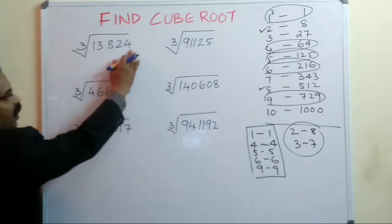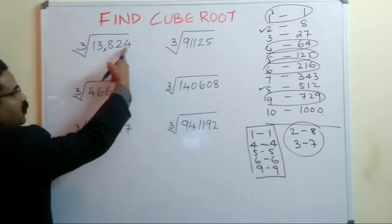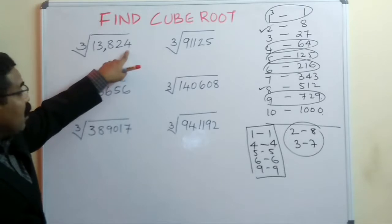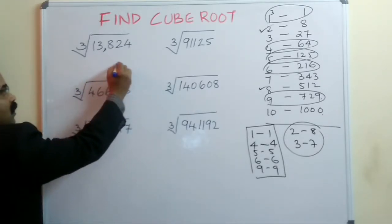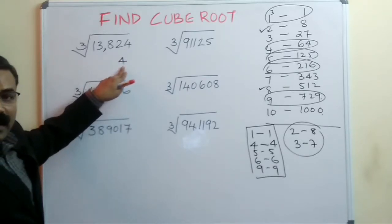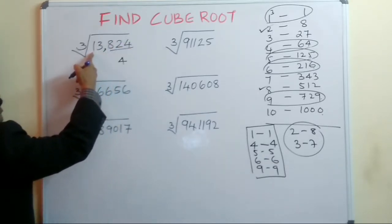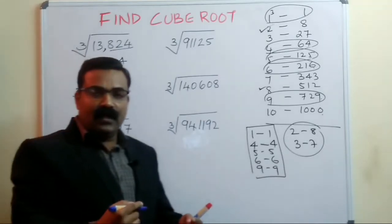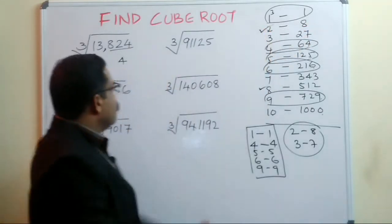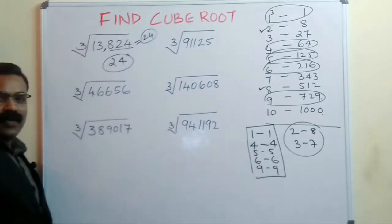Let's solve the first question. From the right, count 3 digits and put a comma. The last digit ends with 4, so the answer also ends with 4. Now remove those three digits — what remains is 13. The perfect cube just before 13 is 8, which is the cube of 2. So put 2 as the first digit. The cube root is 24.